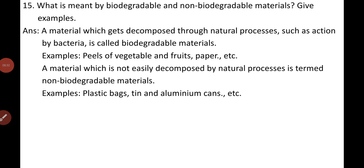Question thirteen: What is meant by biodegradable and non-biodegradable materials? A material which gets decomposed through natural processes such as the action of bacteria is called biodegradable. Examples: peels of vegetables and fruits, paper, cotton cloth, woolen cloth, jute, wood, animal wastes, and leftover food. Non-biodegradable materials are not easily decomposed by natural processes. Examples: plastics, glass, tin, aluminium cans, and other metal objects.